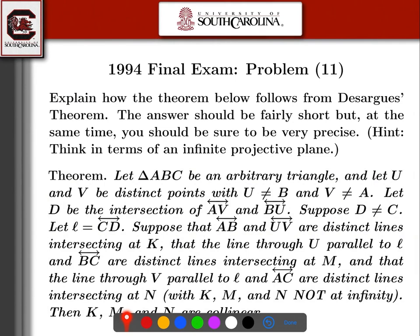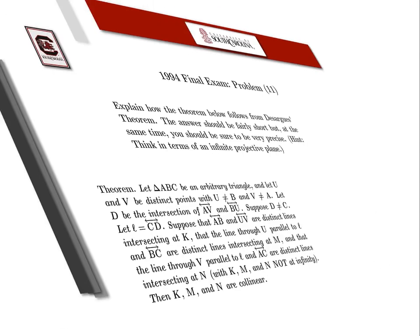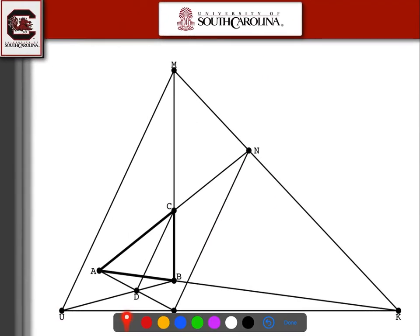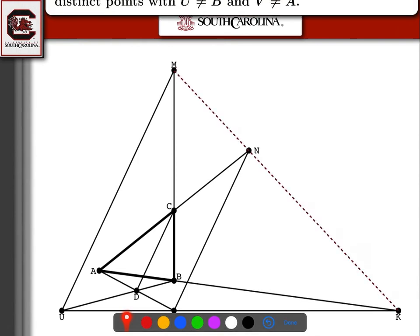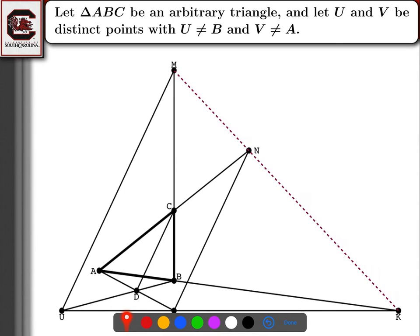The next problem is similar. It's not really the dual Desargues' theorem, but you want to do the same type of argument. Rather than reading the problem statement, I'm going to slowly explain the problem as we go along. In the end, we want to show M, N, and K are collinear. That's the goal.